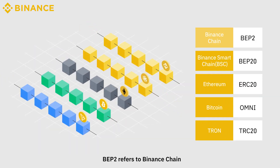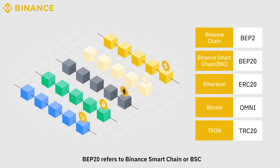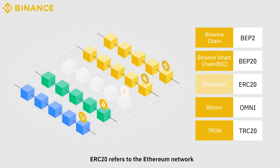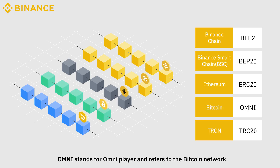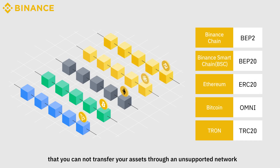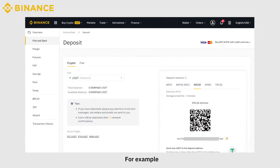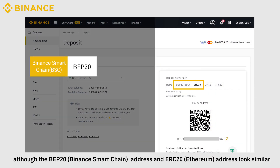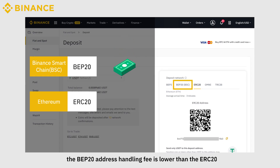BEP2 refers to Binance Chain. BEP20 refers to Binance Smart Chain, or BSC. ERC20 refers to the Ethereum network. OMNI stands for Omni Layer and refers to the Bitcoin network. TRC20 is a technical standard used for smart contracts on the TRON network. We can see the networks as different banks, and keep in mind that you cannot transfer your assets through an unsupported network. For example, although the BEP20 address and ERC20 address look similar, the BEP20 address handling fee is lower than the ERC20.